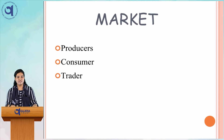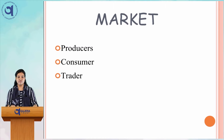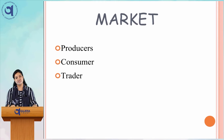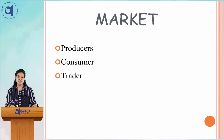There are basically three types of persons involved in this process. The first one is producer, the next one is consumer, and the last one is trader. Let us see what producer and consumer mean.